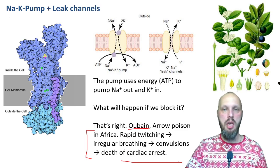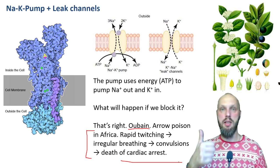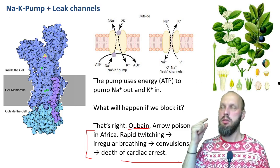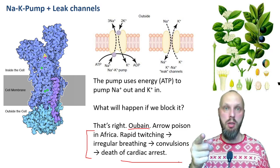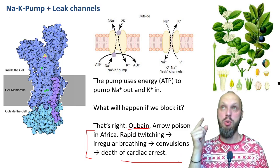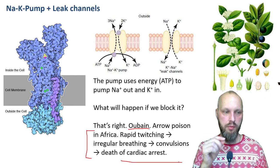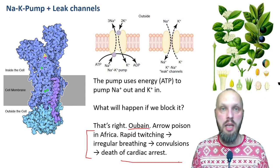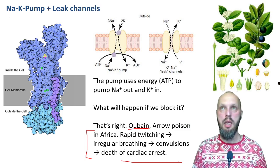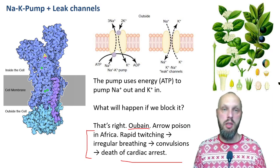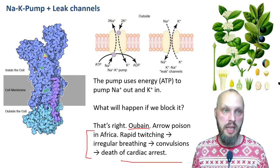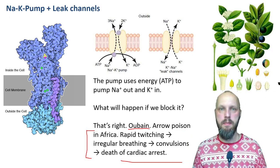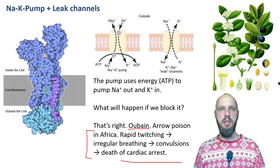Muscles also have action potentials, similar to neurons. And that's the end of this lecture. Now you know where resting membrane potential comes from and have a way to remember the relative concentration of ions inside and outside the cell — sodium outside, potassium inside — along with ions, charges, channels, and pumps. See you next time.